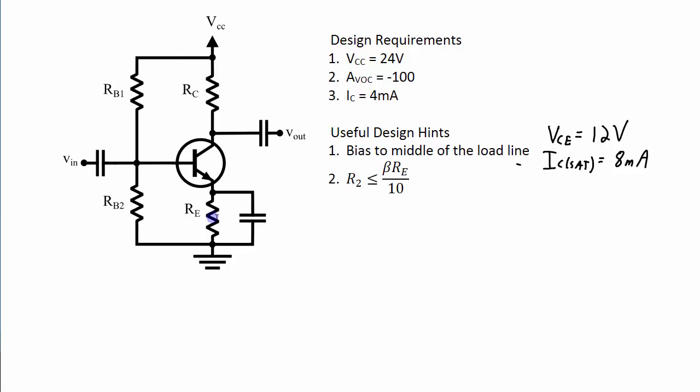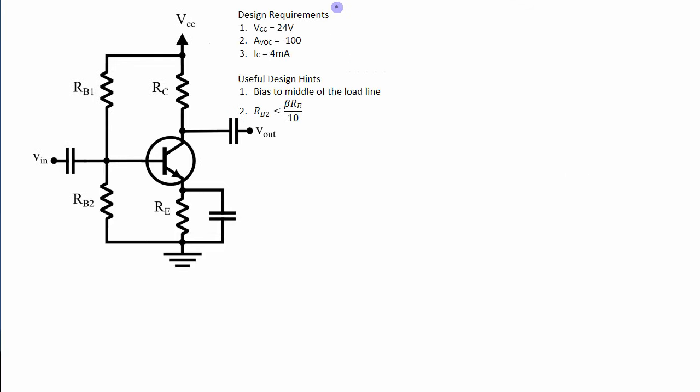Also to allow me to make the approximation that no current is flowing into the base I need to make sure that the resistance seen looking into the base is much bigger than this Rb2 value. So in order for that to be true then Rb2 needs to be less than or equal to beta times Re which is the resistance looking into this base divided by 10. So with this set of design requirements and these hints that will help me in the design let's go through the process of figuring out what resistor values I need.